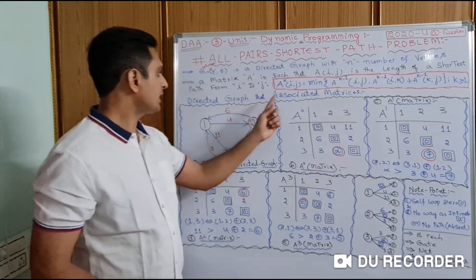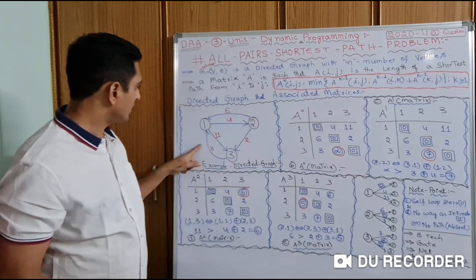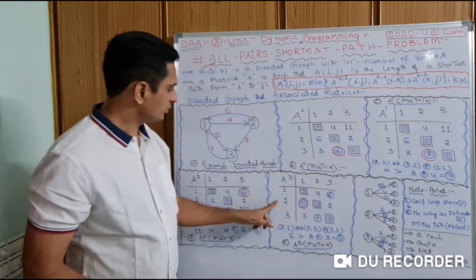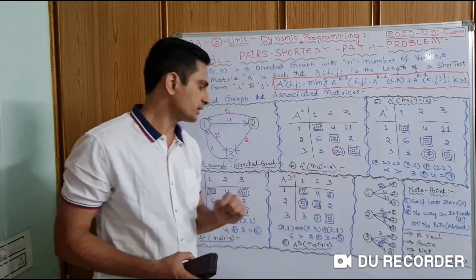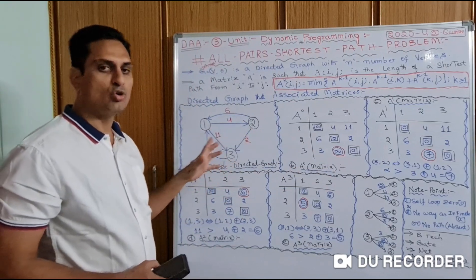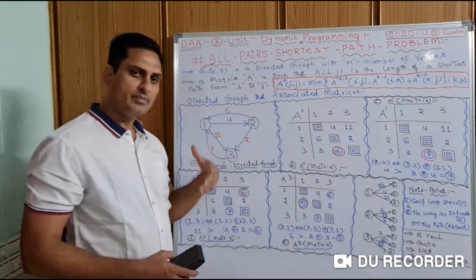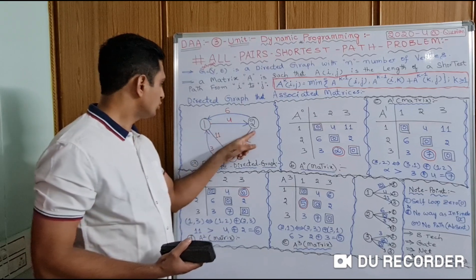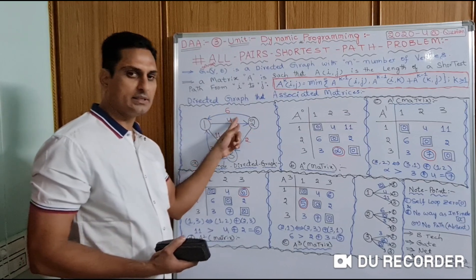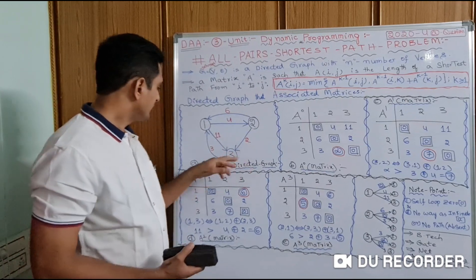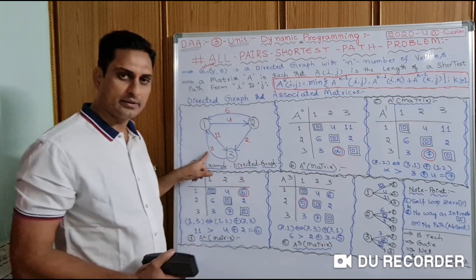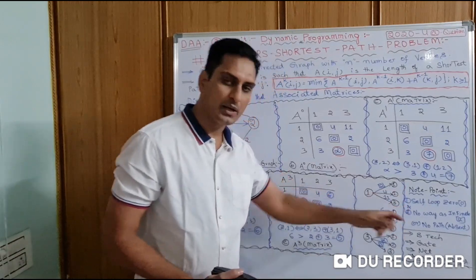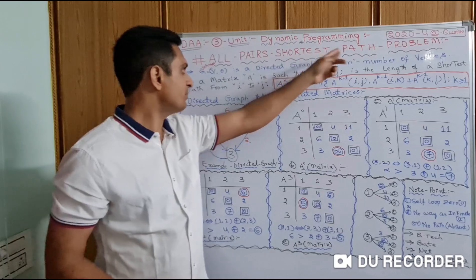We have taken a directed graph with an associated matrix. This is the example directed graph from the textbook. There are vertices 1, 2, 3. The edge weights are: 1 to 2 is 4, 1 to 3 is 11, 2 to 1 is 6, 2 to 3 is 2, 3 to 1 is 3. For every pair of vertices, we need to find all-pairs shortest distances.